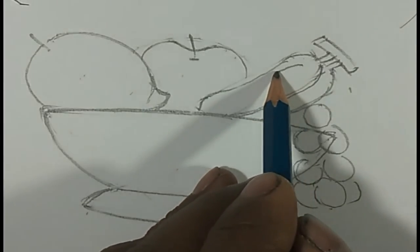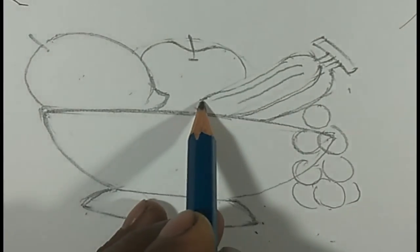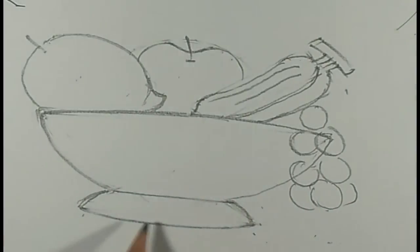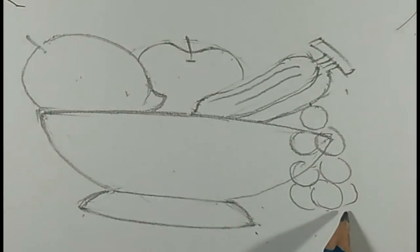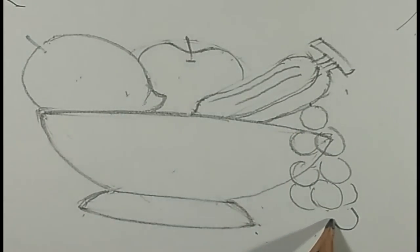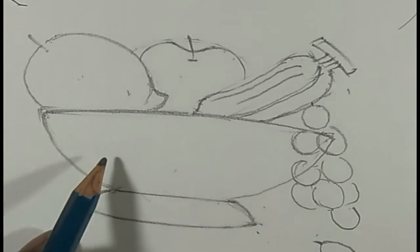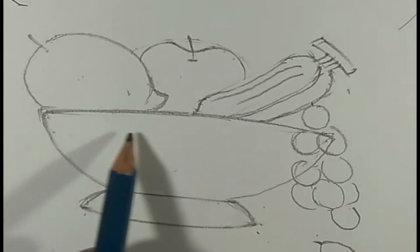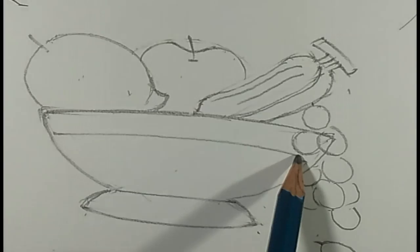Okay, now give a line. Now for the basket we got different fruits, and there I draw one grape. And now for the basket, let's design it. Give one more line.